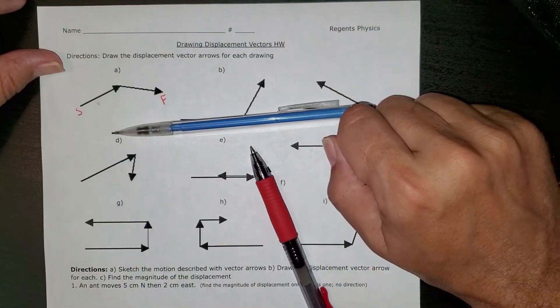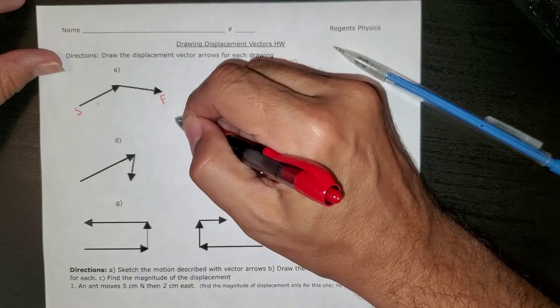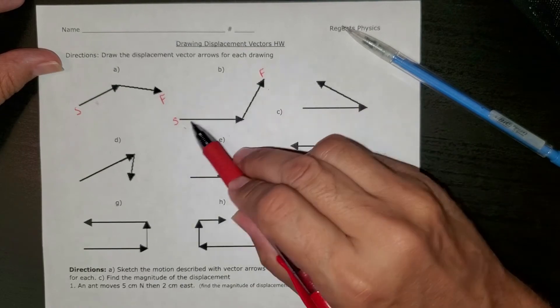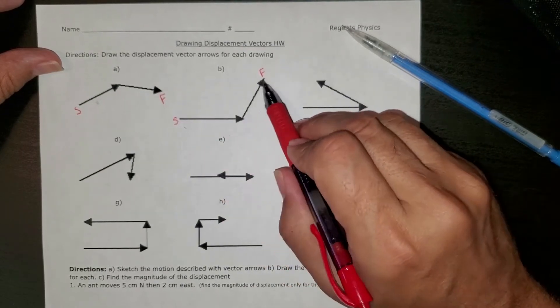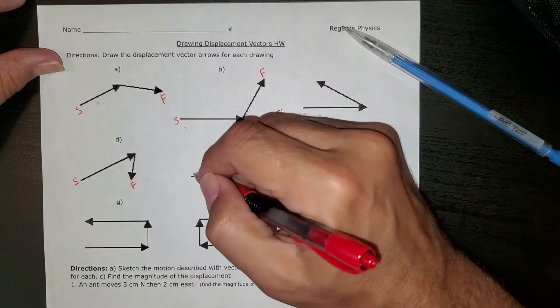You should be using a pencil, but I'm going to use a red pen so you can see what I'm doing. Here's the start and the finish. A person walked this way and this way. The displacement will be from the start to the finish.